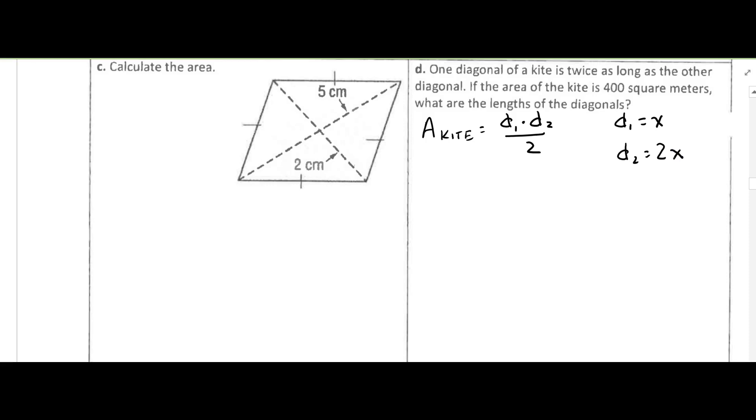So let's go ahead and substitute in what we know. We know the area of the kite is 400 square meters, so that's going to be 400. And we're going to let D1 be X, so that's X times, and D2 is 2X, divided by 2.